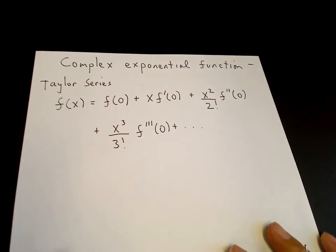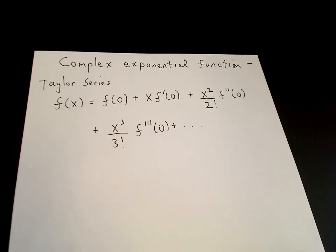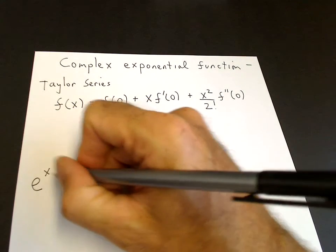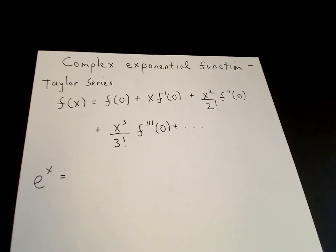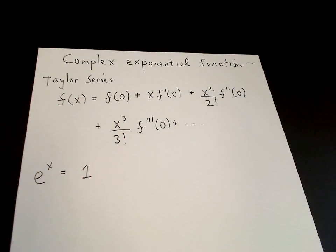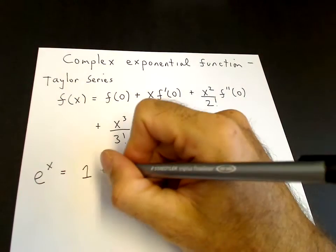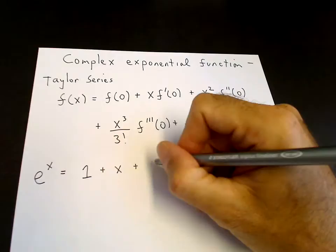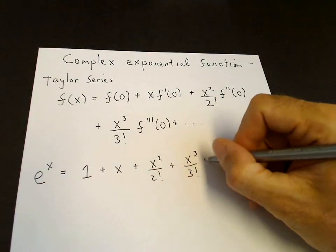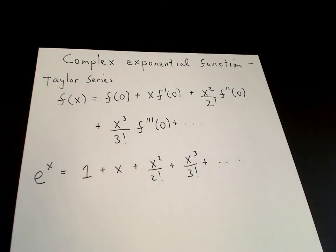So this is a Taylor series. Sometimes it converges, sometimes it doesn't — you study that in calculus. It turns out for the exponential function and for the sine and cosine functions, it converges for all x. For e to the x, the derivative is e to the x, so e to the 0 is 1 — that's f of 0. f prime of 0 is again 1, and f double prime of 0 is 1. So we get a very nice Taylor series for e to the x.